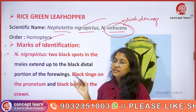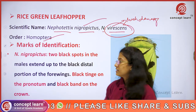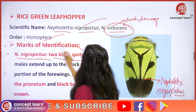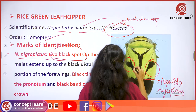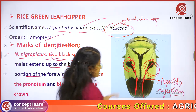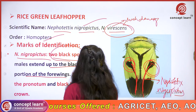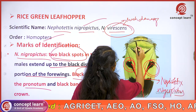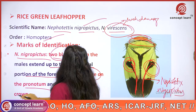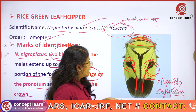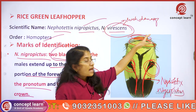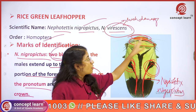Both species belong to the order Homoptera. There is a clear differentiation between the two species. In Nephotettix nigropictus, there are usually two black spots which extend towards the back portion of the forewings. A black tinge is present on the pronotum, and a black-colored band is also present upon the crown.